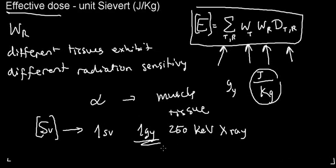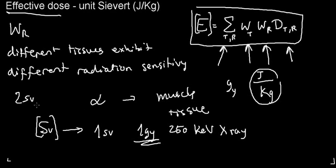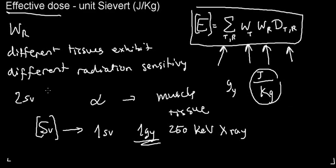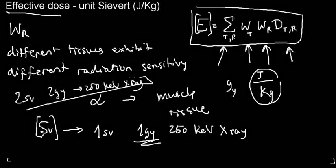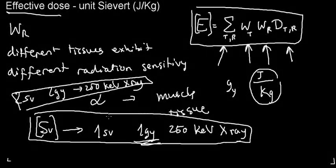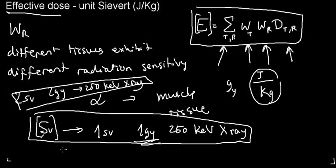If a region experiences two sieverts of damage from a nuclear event, it means you can expect damage equivalent to what two grays of 250 keV x-rays would cause on human tissues. Gray is a physical concept; sievert is about biological damage. You don't need to use these units daily — just understand that sievert measures damage to human tissues.